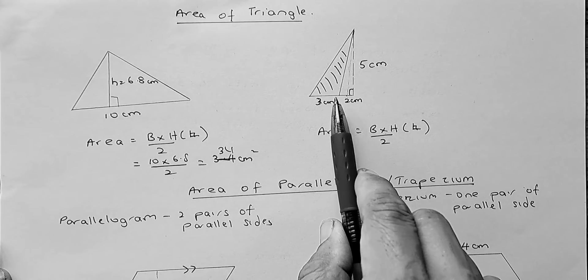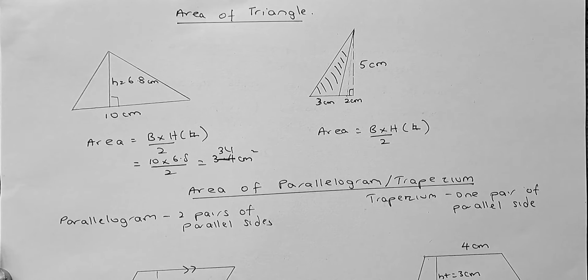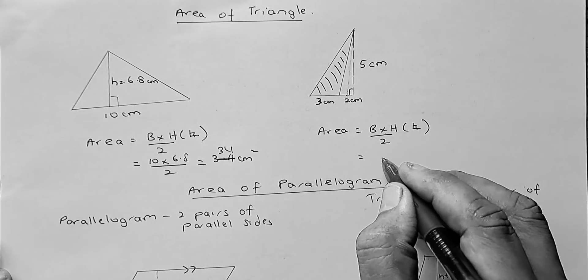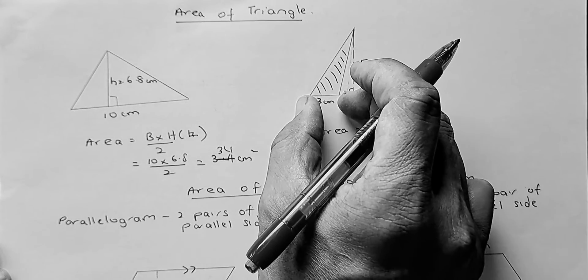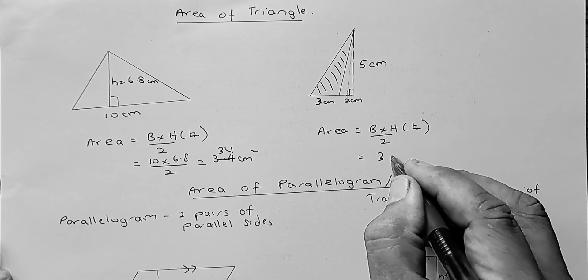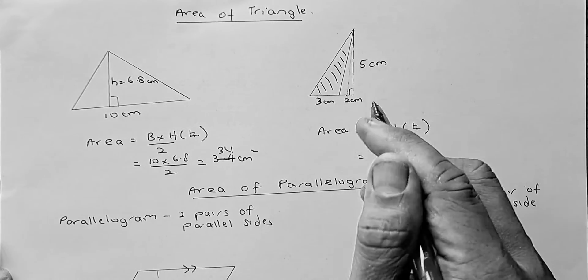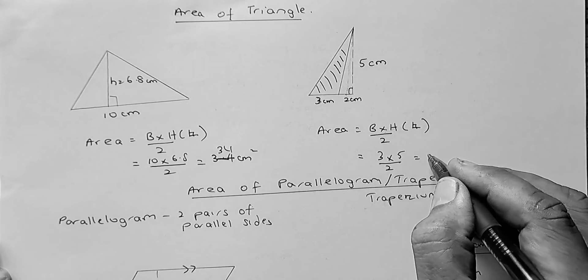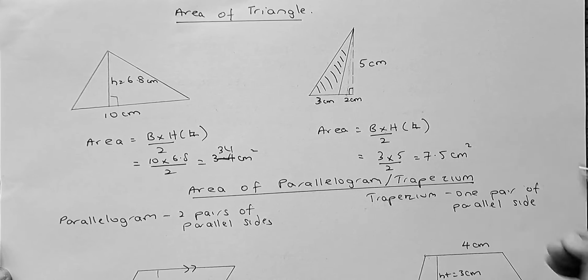On the other hand, if you have a triangle that looks like that, the base is slightly different now. The base is not 5, the base is only 3 because this part is 3. If you calculate 5, you are calculating the whole triangle. So, the base is 3, the height is this perpendicular height, it must be 90 degrees times 5 divided by 2 and the answer is going to be 7.5 cm squared.